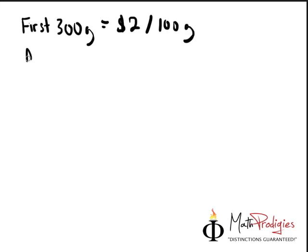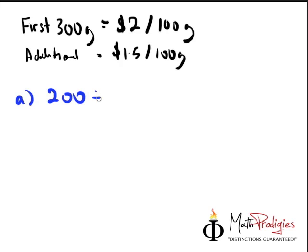$2 per 100 grams. That's what I'm going to write. And if I were you, any additional, I would write it down as $1.50 per 100. So the first part for part A is simply 200 grams divided by 100 grams is going to give you 2,